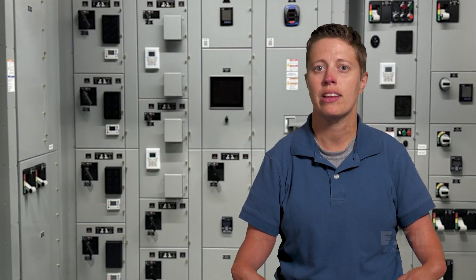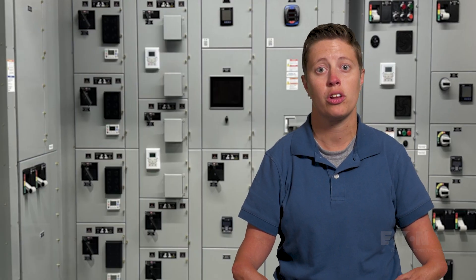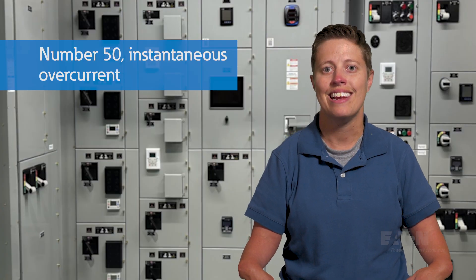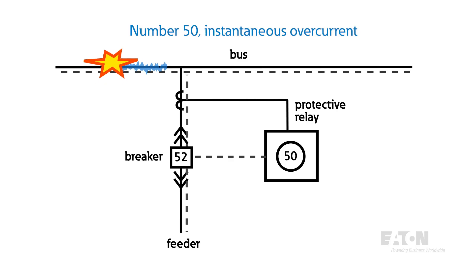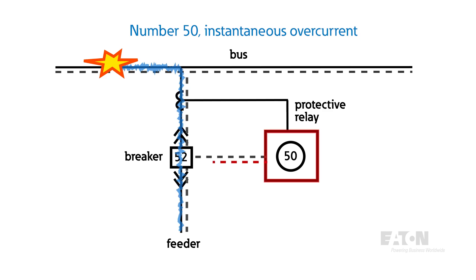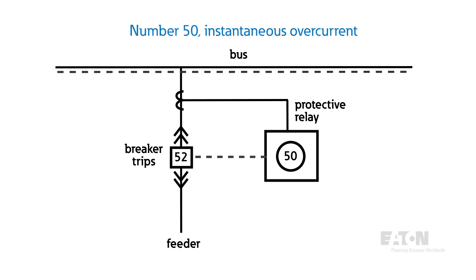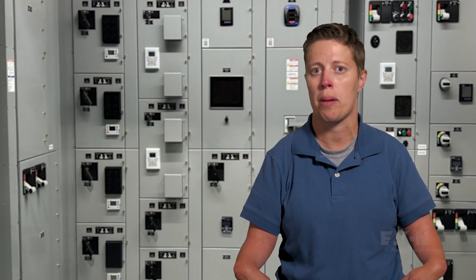Common protective relay functions include Number 50, instantaneous overcurrent. The instantaneous overcurrent function sends a trip signal any time current measured by the current transformers exceeds a set value. This function does not introduce any intentional time delay.